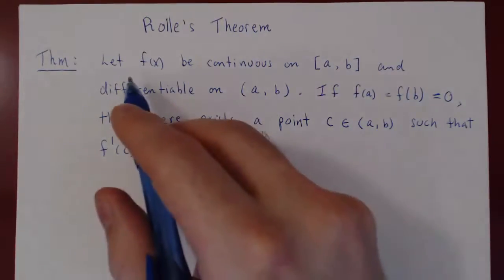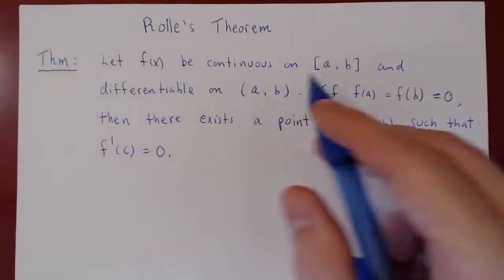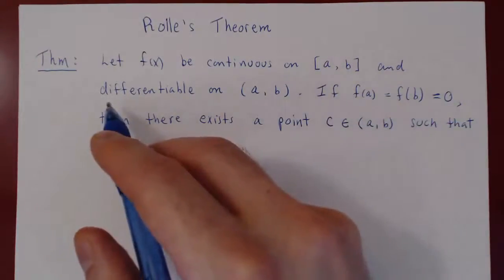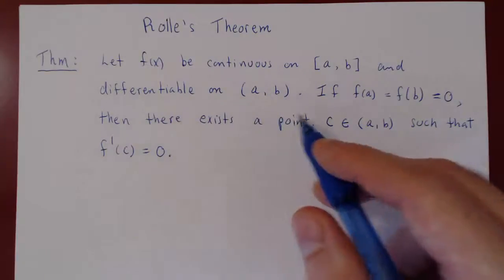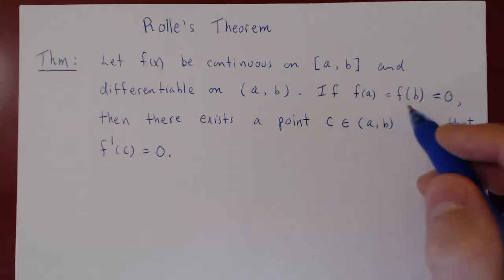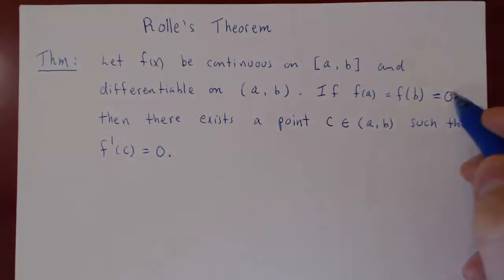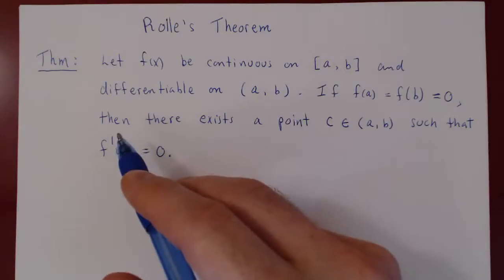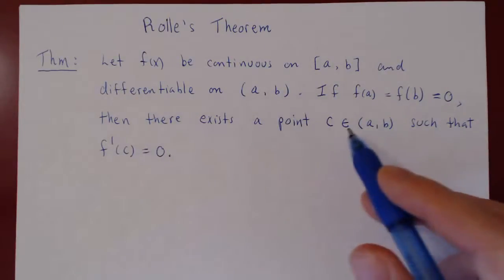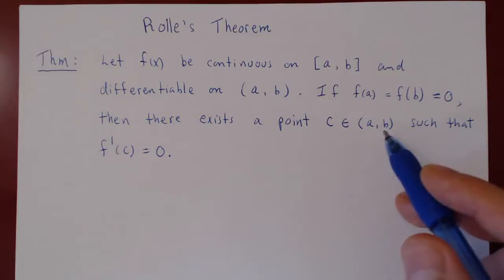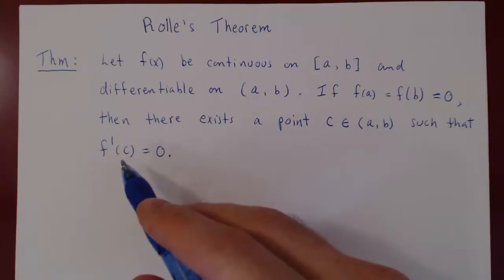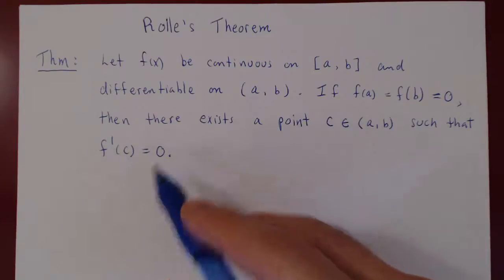And this is Rolle's Theorem. To recap, we have three assumptions: f of x is continuous on the closed and bounded interval [a, b]; f of x is also differentiable on the open interval (a, b); and f of a equals f of b equals 0. The conclusion is that there must exist a point c in (a, b) such that f prime of c equals 0 — the curve is flat at x equals c.